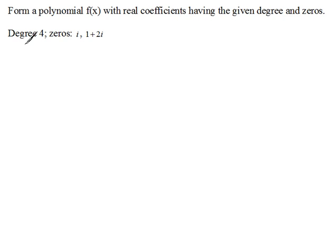So we're given a degree four polynomial. That tells us that when we're done we should have an x to the fourth equation. It also says that we have zeros at i and at 1 plus 2i.